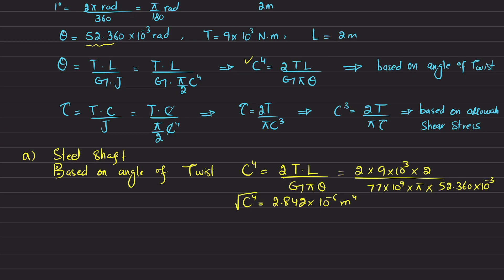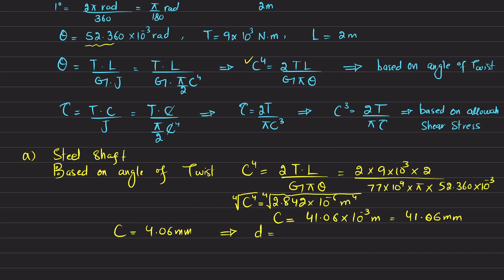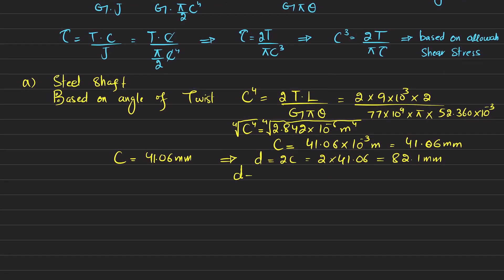Taking the fourth root using a calculator gives C = 41.06 × 10⁻³ m = 41.06 mm. Since diameter D = 2C, we get D = 2 × 41.06 = 82.1 mm. So based on the angle of twist, the required diameter is 82.1 mm.